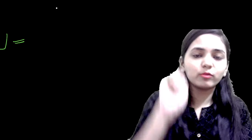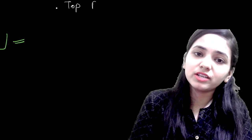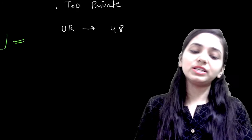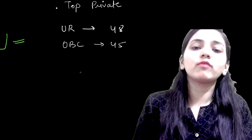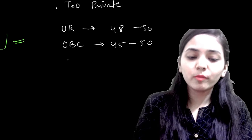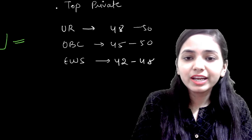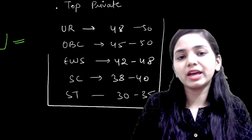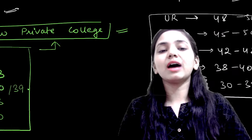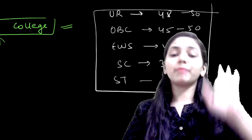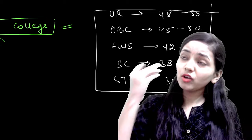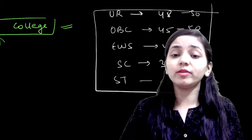The second option is top private colleges. If your score is 48 to 56 for general, 45 to 50 for OBC, 42 for EWS, 38 for SC, and 35 for ST, you can get into the top private colleges. There is a level of top private colleges where you can get admission with scores from 52 to 35, comparing these different ranges.